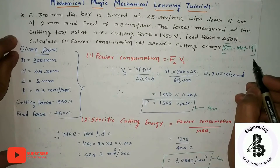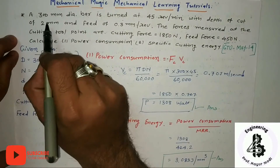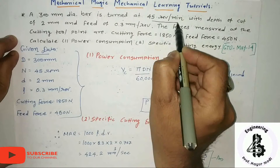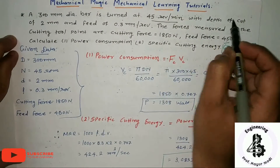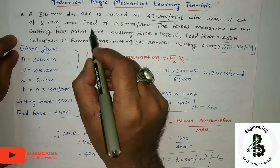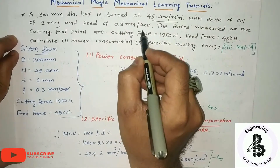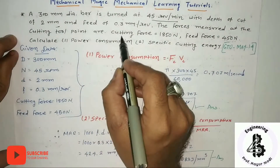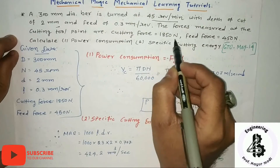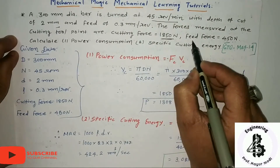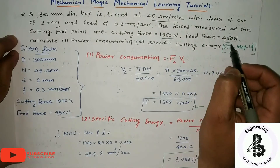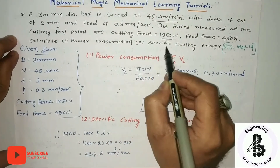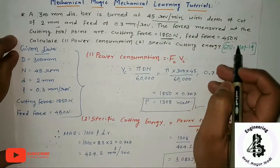The given data is: a 300 mm diameter bar is turned at 45 revolutions per minute, with a depth of cut of 2 mm and a feed of 0.3 mm per revolution. The forces measured at the cutting tool point are: cutting force equal to 1850 Newton, and feed force equal to 450 Newton. Calculate the power consumption and the specific cutting energy.